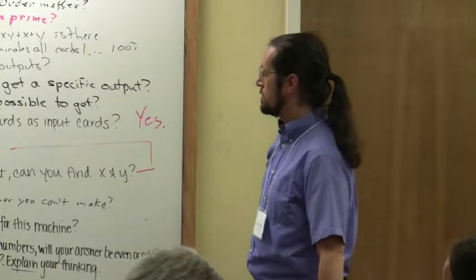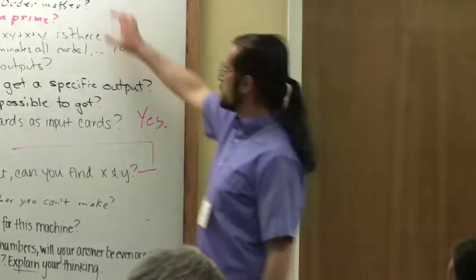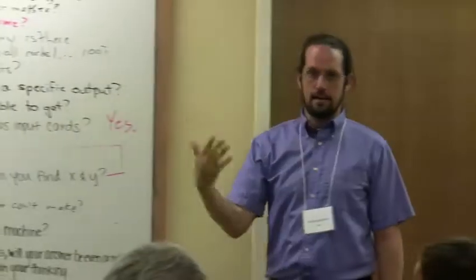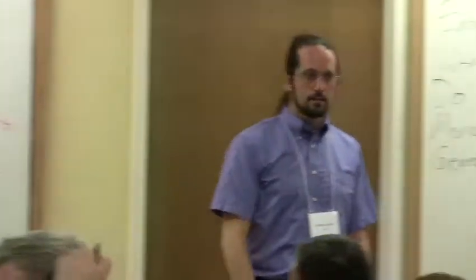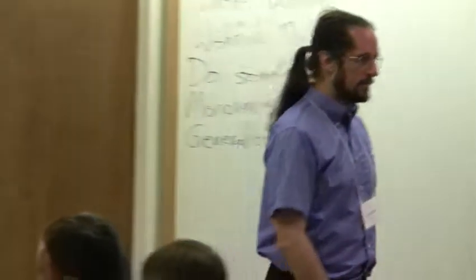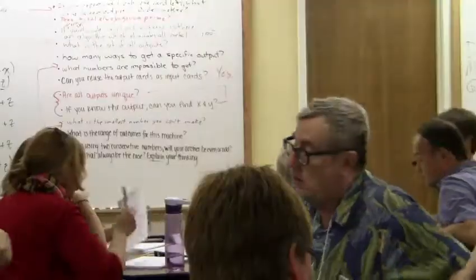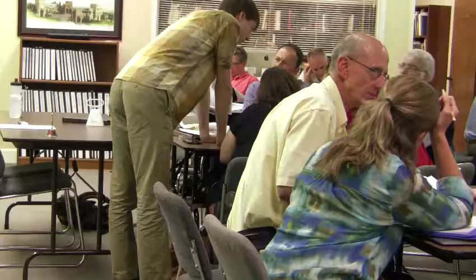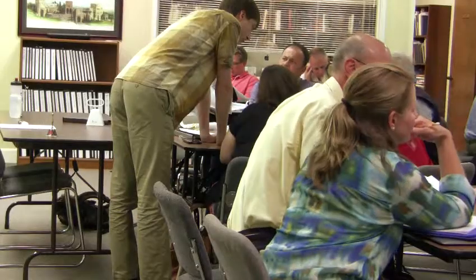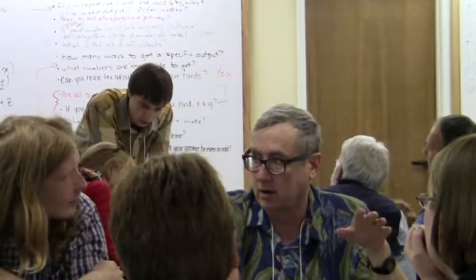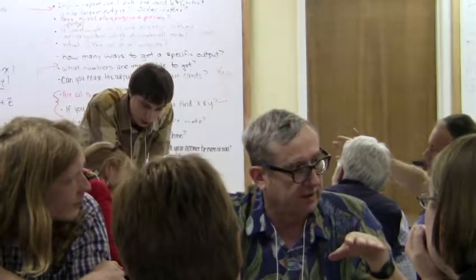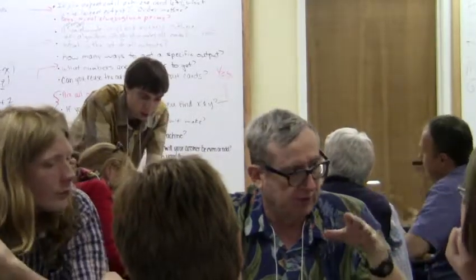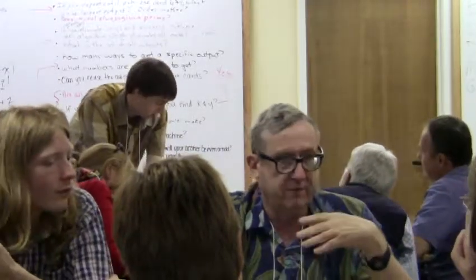I'll give you some more time to explore again toward this question of what are the possible things that could end up on that final card. You add up 1 through 5 in any order, you always get the same result — the sum of the numbers 1 through 5.